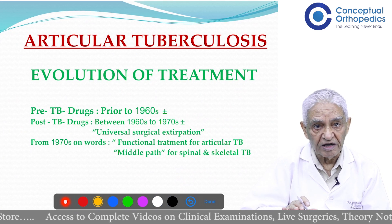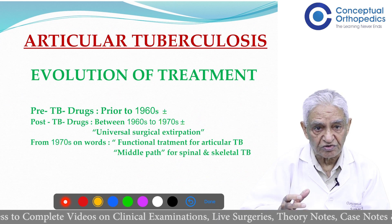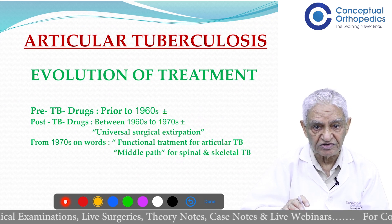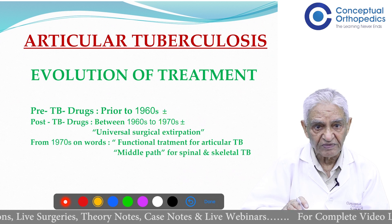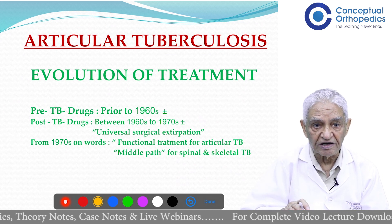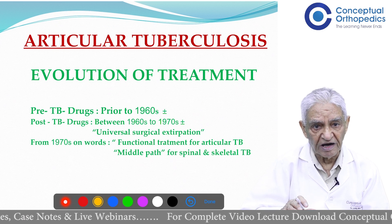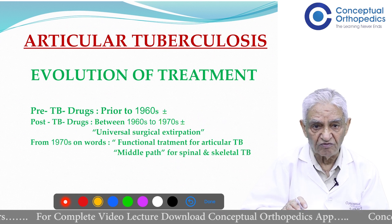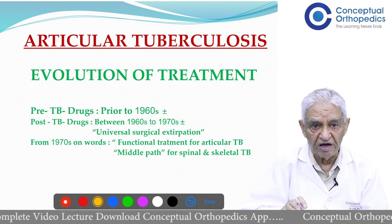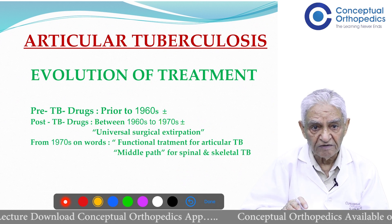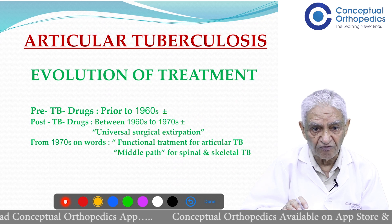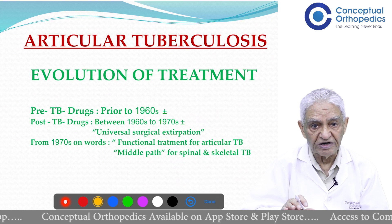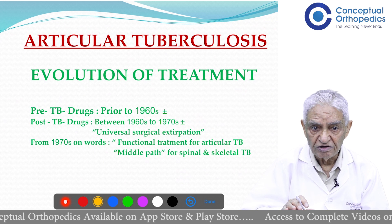Today if we are talking about articular tuberculosis — meaning tuberculosis of the joints — one should know that 50% of tuberculosis of the skeletal system occurs in the vertebral column. The remaining 50% occurs in other joints. Just to remember: 50% occur in the vertebral column, 20% in the hip joint, 10% in the knee joint, 5% in the ankle and foot.